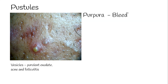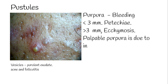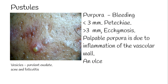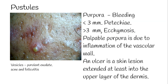Purpura is a flat lesion due to bleeding into the skin. If purpura is smaller than 3 mm, it is called petechiae; if it is larger than 3 mm, it is called ecchymosis. Palpable purpura is due to inflammation of the vascular wall. An ulcer is a skin lesion that extends at least into the upper layer of the dermis.